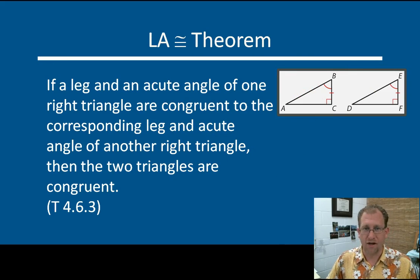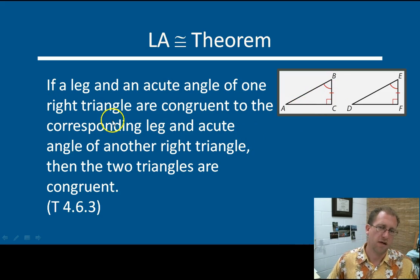And lastly, leg angle theorem. If a leg and an acute angle of a right triangle are congruent to the corresponding leg and acute angle of another right triangle, then the two triangles are congruent. So this is angle side angle wearing the right triangle costume. And so again, you have the other angle and a leg. It can be the one in between or it could have been this one. It doesn't matter. If you have a leg and an angle on a right triangle, you have congruent triangles.